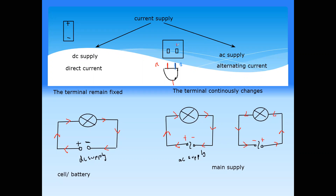The terminals continuously change in the socket — at one moment the right-hand side is positive and the left-hand side is negative, and the next moment they switch. So it does not make a difference which way you connect the plug. But in DC supplies, if you connect a device the other way around — if you connect a cell in the opposite direction — the device will not work. AC supply continuously changes direction, whereas DC supply does not change direction at all.